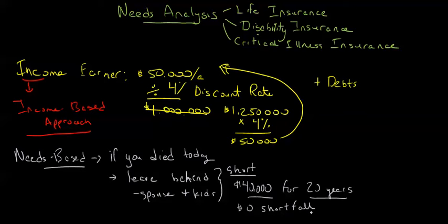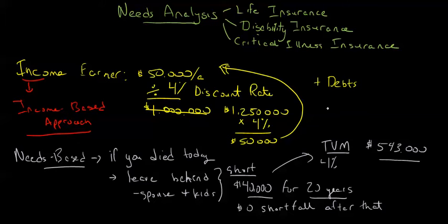This would lead us to a quick time value of money calculation. You pull out your financial calculator, again assuming a 4% rate of return, and you would need about $543,000 give or take of insurance. You'd round that up to probably $600,000 or thereabouts, maybe even $750,000. The point is that it's substantially less than what we see with the income-based approach, and this is what we do find.